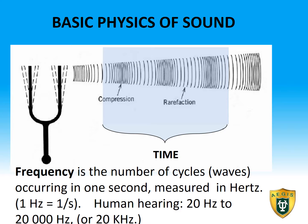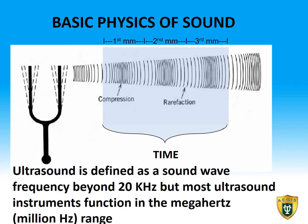Humans hear from 20 hertz to 20,000 hertz, or 20 kilohertz. A kilohertz is one thousand hertz. Ultrasound is defined as a sound wave frequency beyond 20 kilohertz, but most ultrasound instruments function in the megahertz, or million hertz, range.